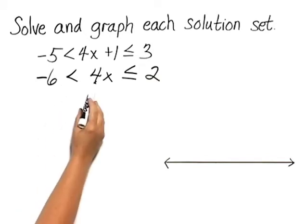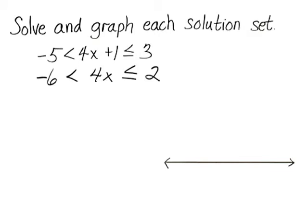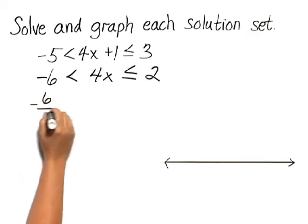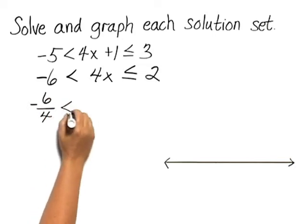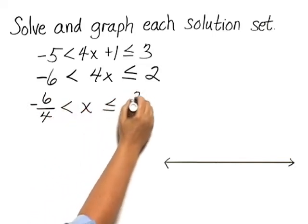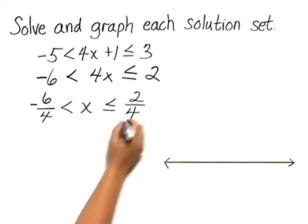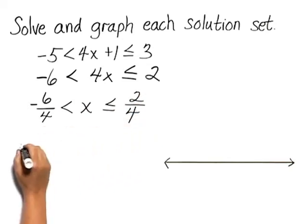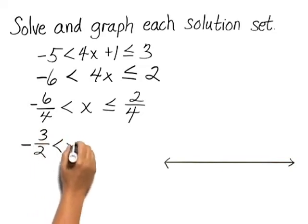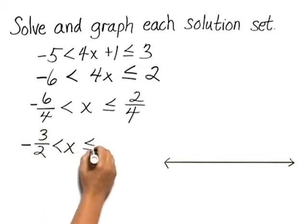Now I can divide everything by 4 to get x by itself. I have negative 6 fourths is less than x, and x is less than or equal to 2 fourths. These can both be simplified to give me negative 3 halves is less than x, and x is less than or equal to 1 half.